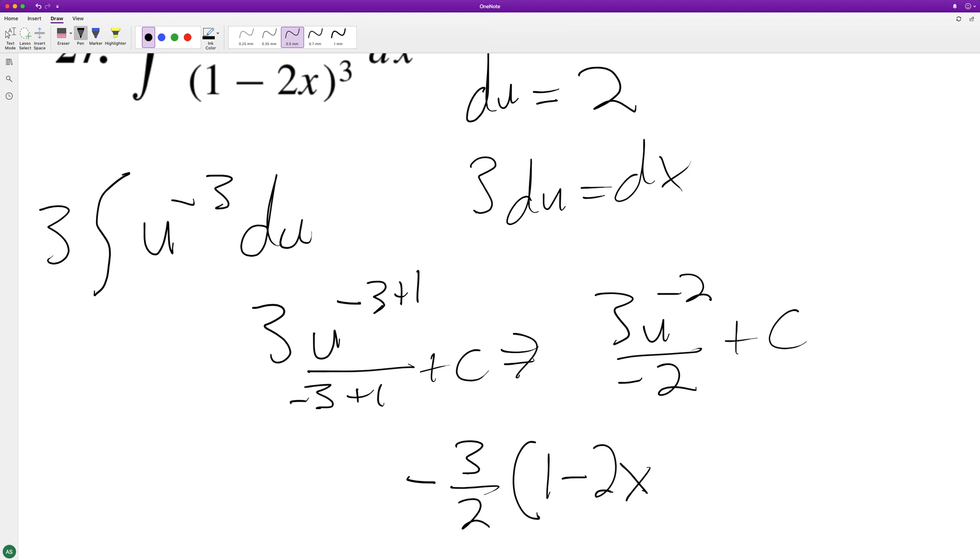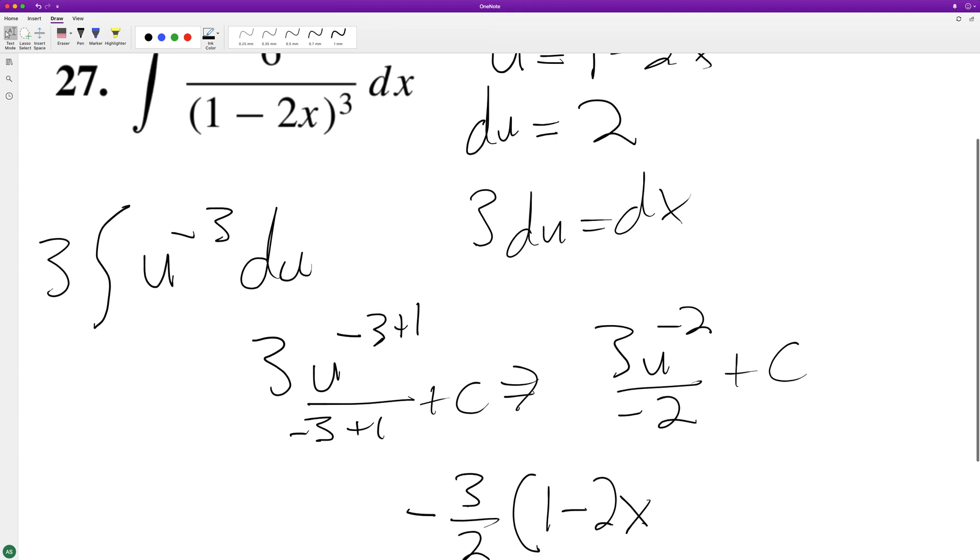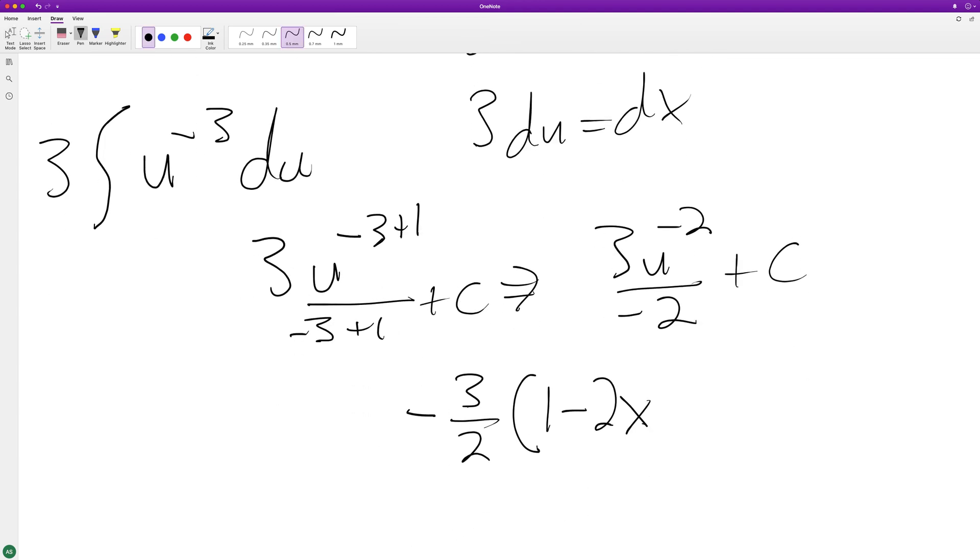We end up with negative 3 halves, and in place of u, 1 minus 2x raised to the negative 2, plus c. And that's it. I hope this helped you out, I appreciate you watching.